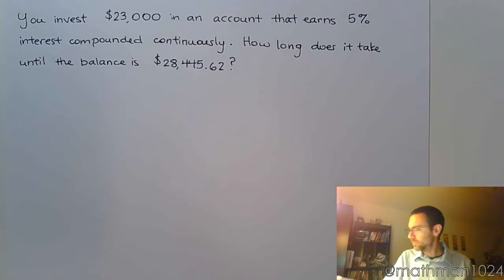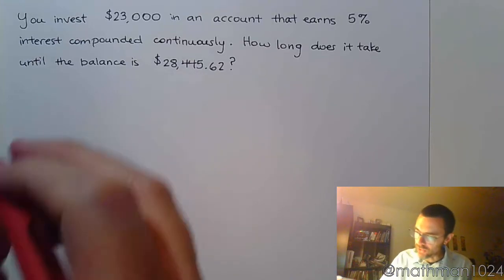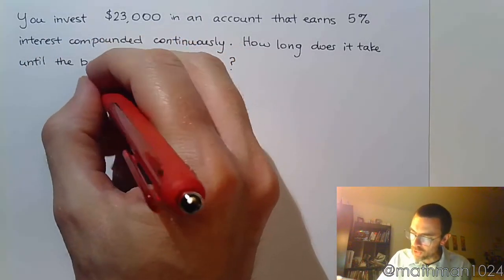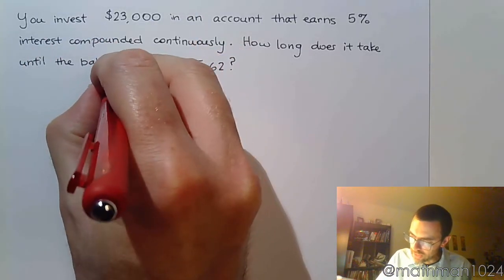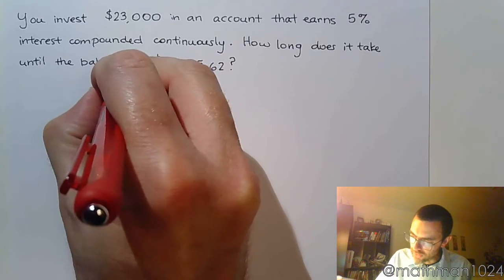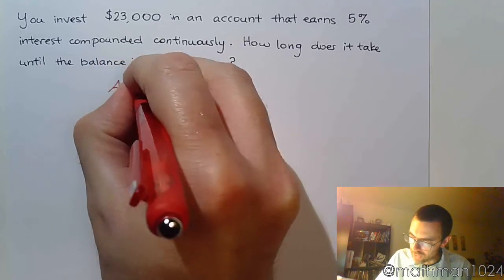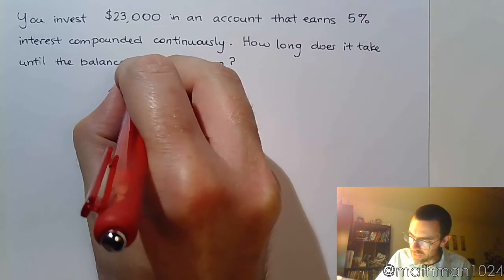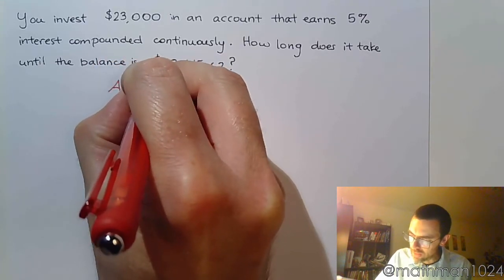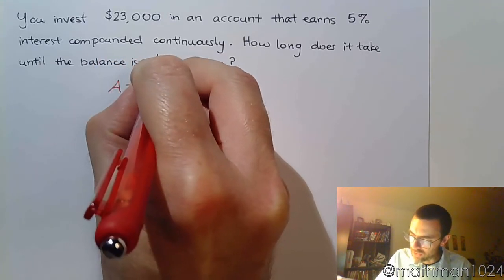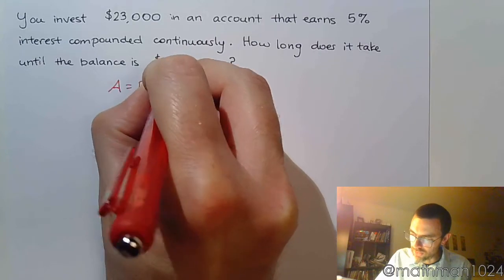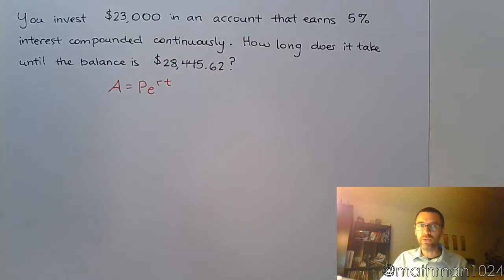Here's what we're going to do. Naturally, we're going to start with our equation. Since this is an investing problem, let's use A = Pe^(rt). This is for continuous compounding.